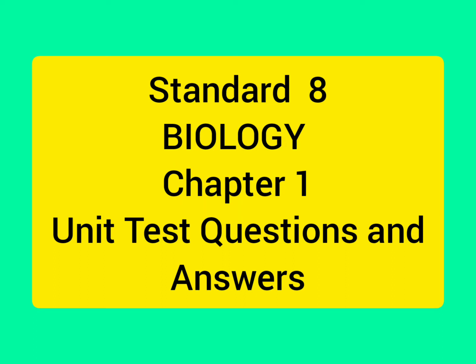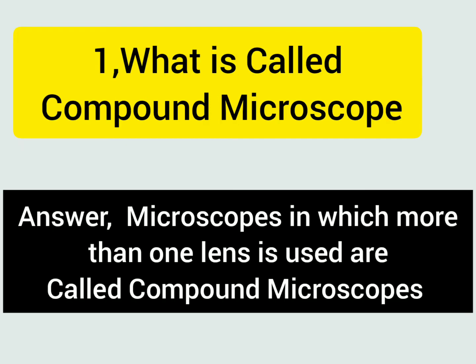Standard 8 Biology, Chapter 1 Unit Test. Questions and Answers. What is called a compound microscope? Answer: Microscopes in which more than one lens is used are called compound microscopes.